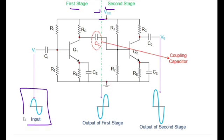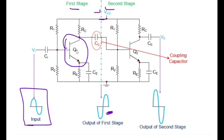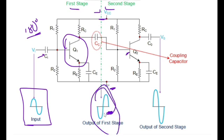If we apply an input signal with zero degrees phase difference at the base of transistor Q1, at the coupling capacitor between the two stages we will receive the first stage output with a 180-degree phase shift. This is because a common emitter mode transistor provides 180 degrees of phase shift to the input signal. This 180-degree phase-shifted signal is then applied at the second stage, which amplifies it and shifts it by another 180 degrees.